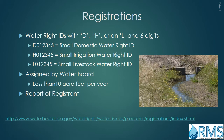Registrations can be identified by a Water Right ID that begins with a D for Small Domestic Registrations, H for Small Irrigation Registrations, or an L for Small Livestock Registrations, followed by six digits. Registrations are agreements with the Water Board that include provisions such as when and how much water may be diverted, what the water may be used for, and where the water may be used. Registrations are generally for diversions of less than 10 acre-feet of water per year. Registrants are issued a Water Right Certificate and file a Report of Registrant annually to record their water diversion.